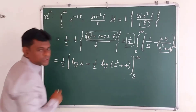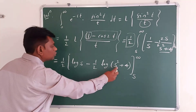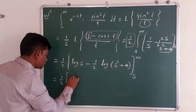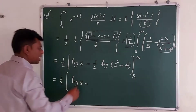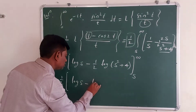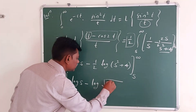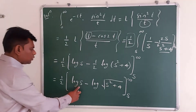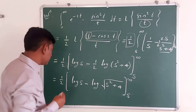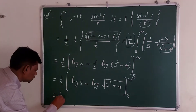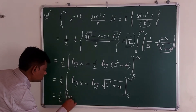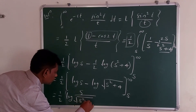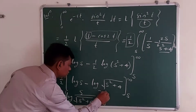Now half times log of s squared plus 4 means log of root of s squared plus 4. So this equals one half times log s minus log of root s squared plus 4, with limits from s to infinity. Using log a minus log b equals log a over b, this becomes one half times log of s over root s squared plus 4, with limits from s to infinity.